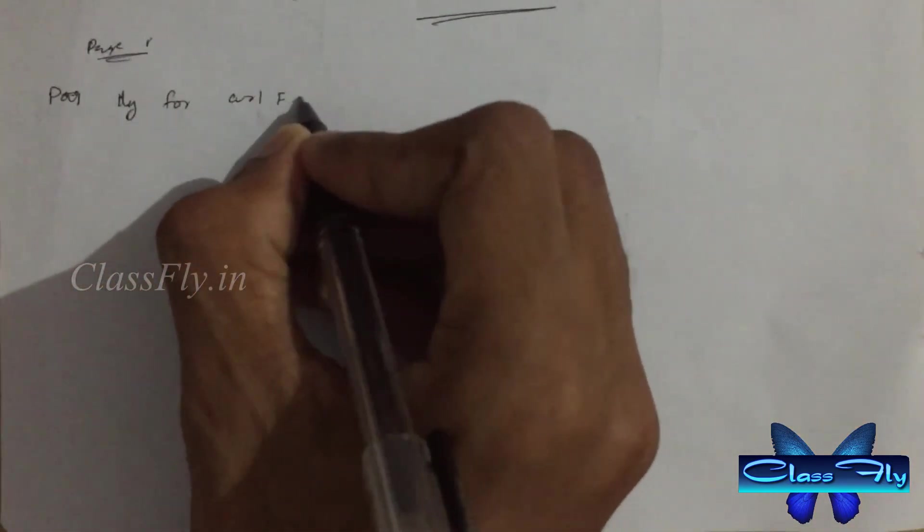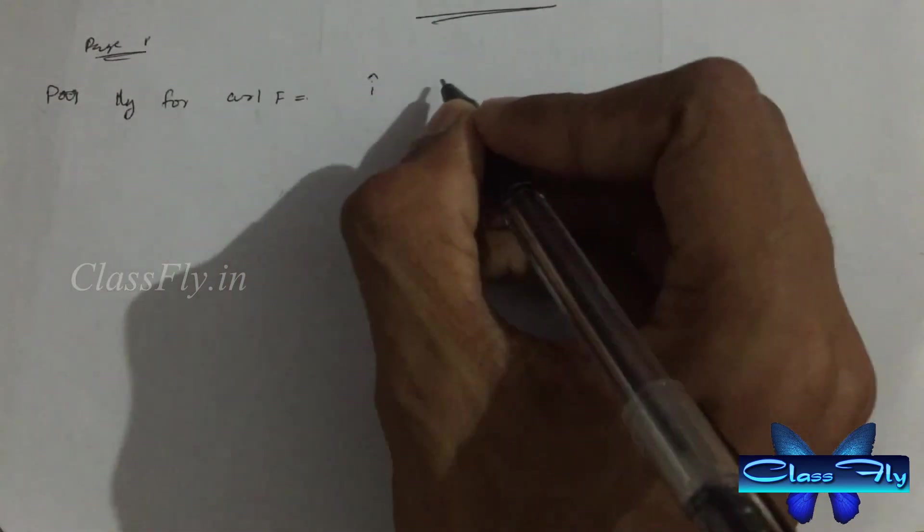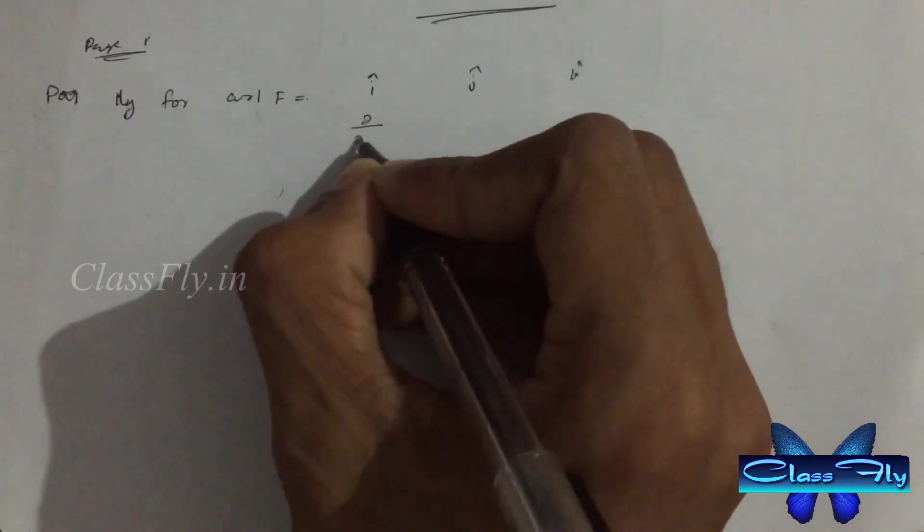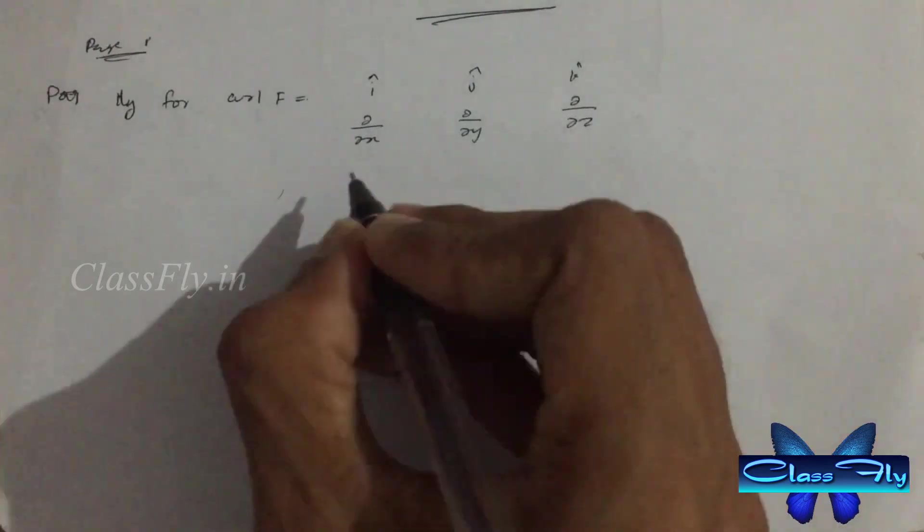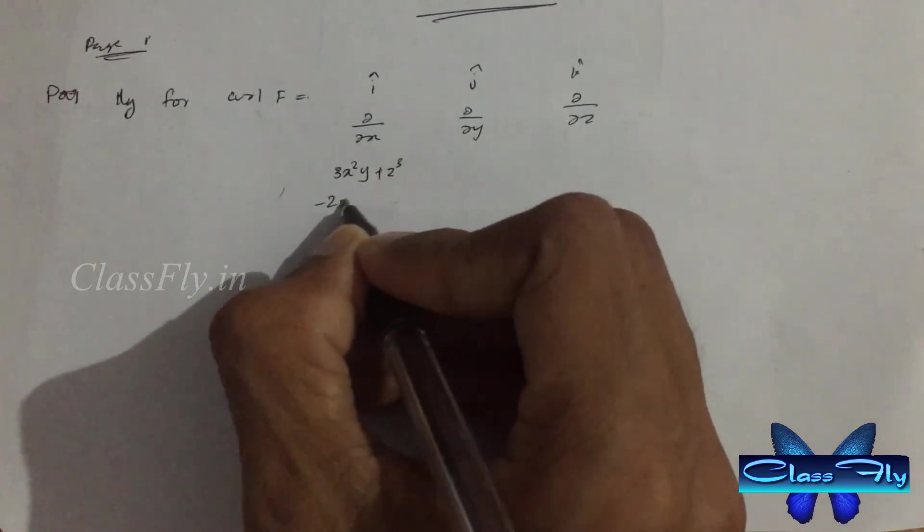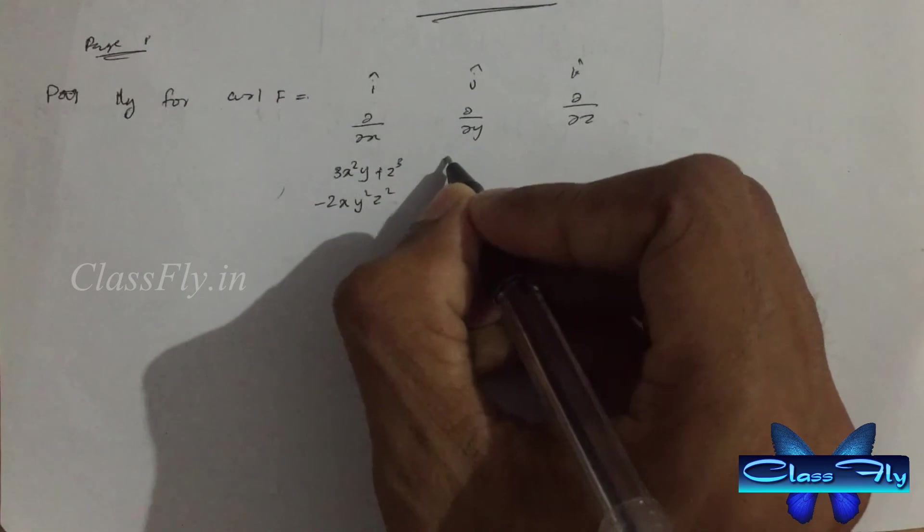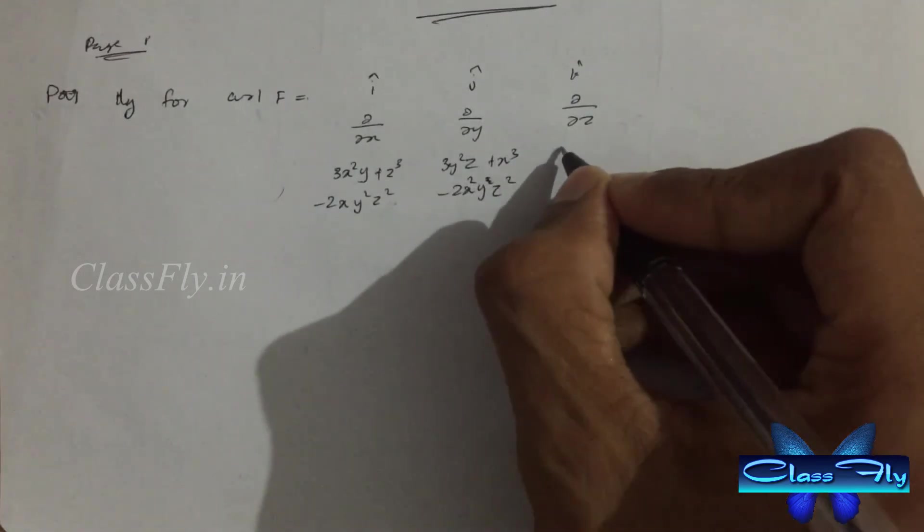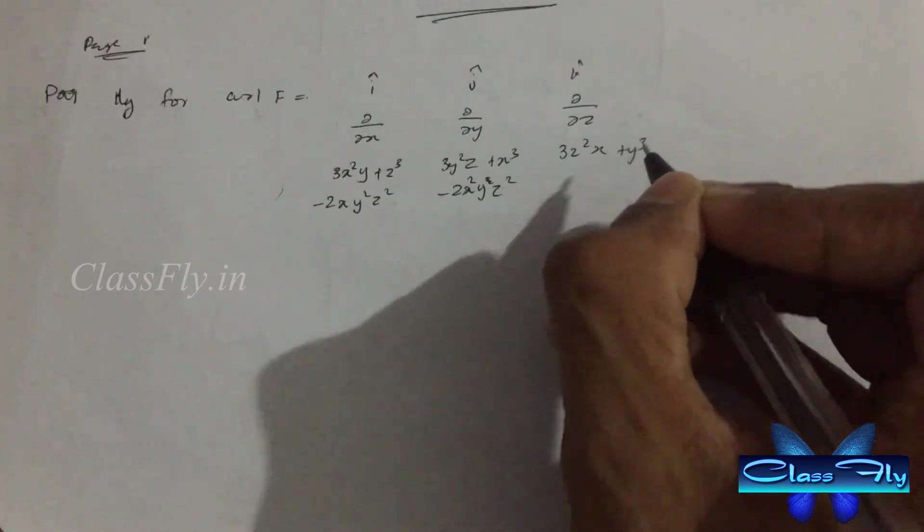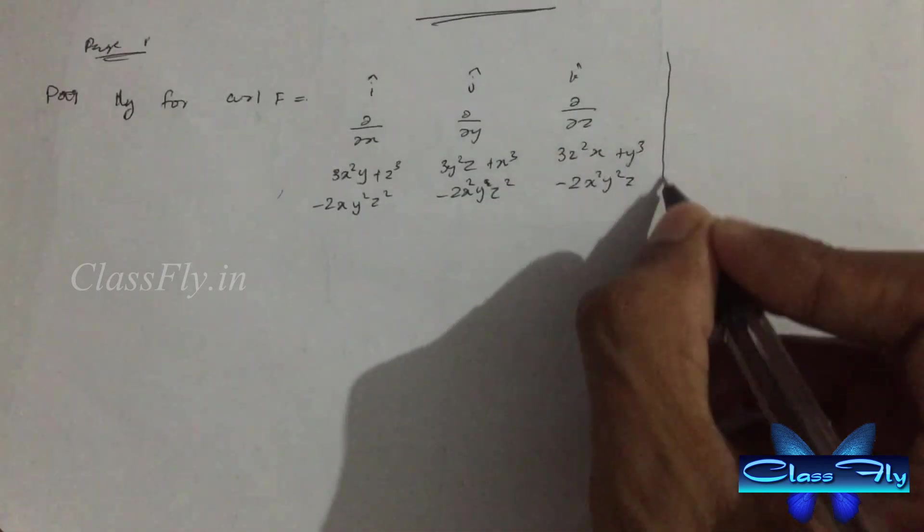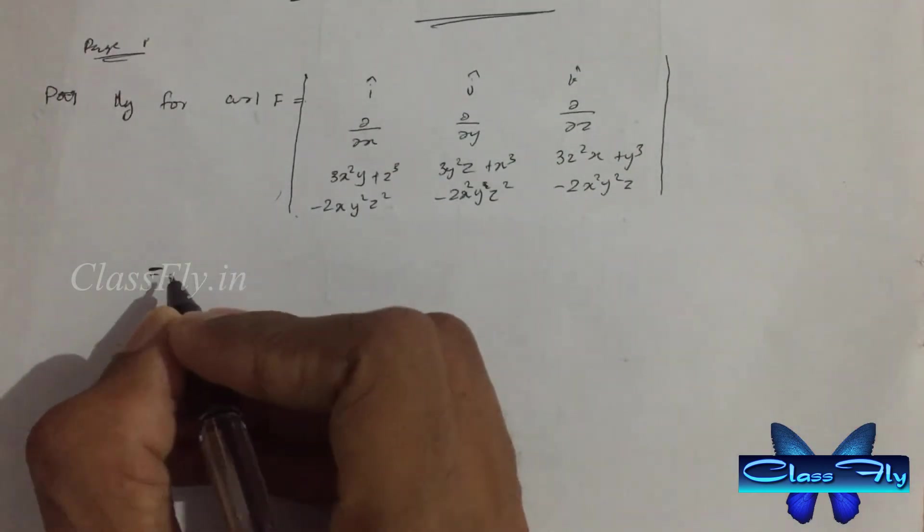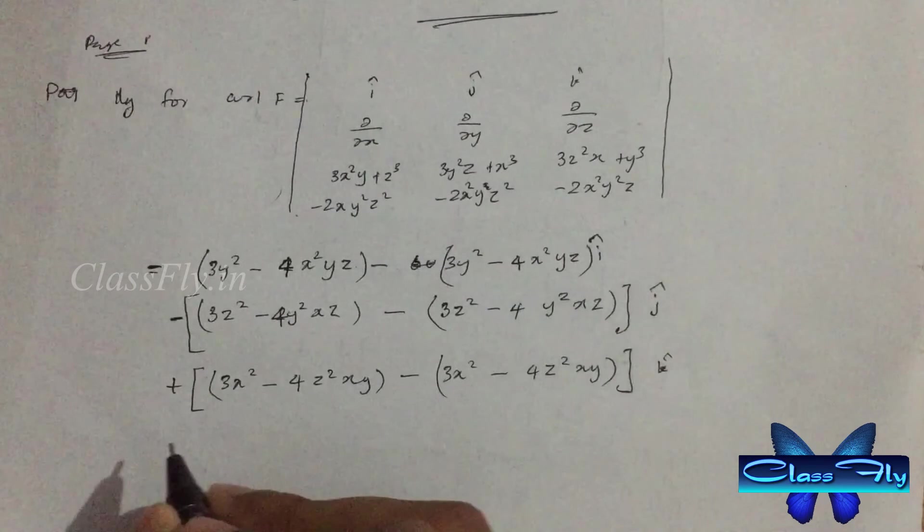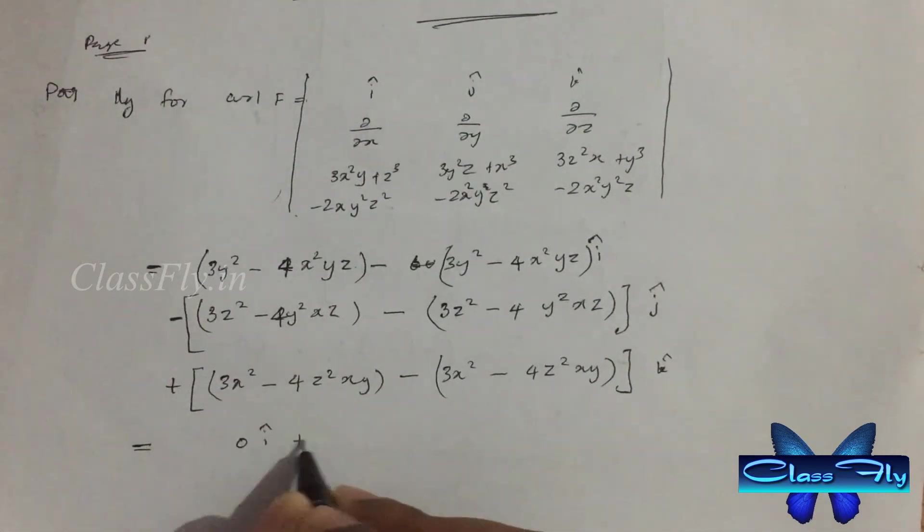Similarly, for curl F we have to solve the determinant. Now observe the answer we got for the determinant. It simply cancels each other and finally we get the curl F equals zero.